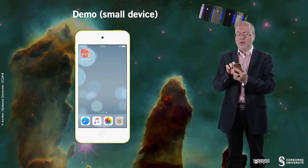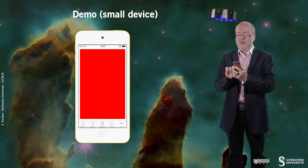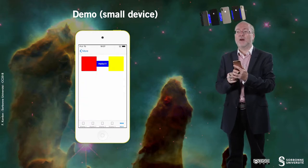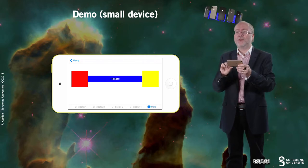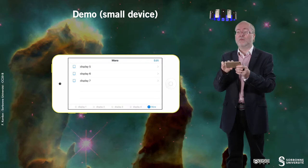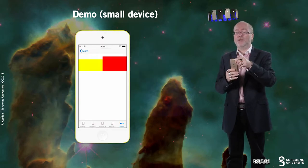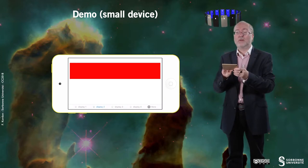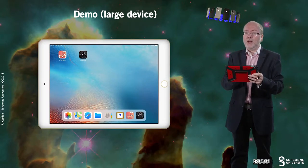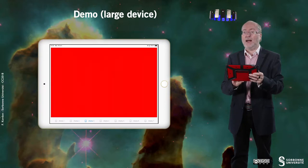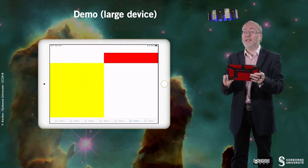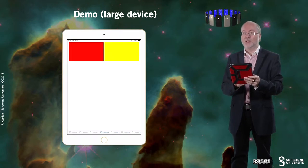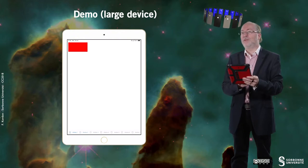Let's have a quick look at this example that proposes various types of layouts. There are seven different layouts, and for each layout you also have the corresponding display when the device is in landscape mode. You can see the same constraints applied with a different device orientation. On a large device the layouts are adapted to the size of that device, and changing orientation shows that constraints are also adapted to the new height and width.